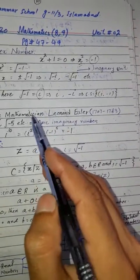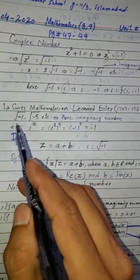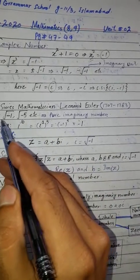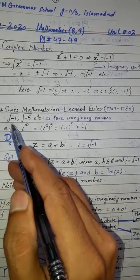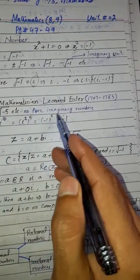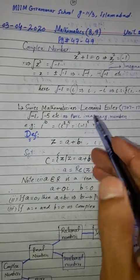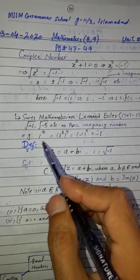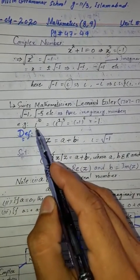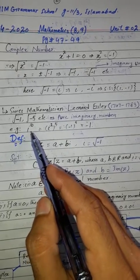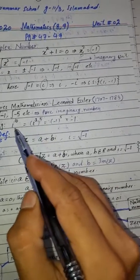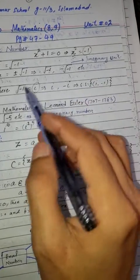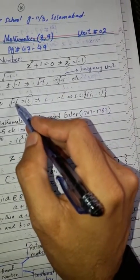So that's why we call such numbers pure imaginary numbers. Now, for example iota to the power 10 — you need to know how to solve this. Since iota squared equals minus 1, you convert the power into pairs of squares. Iota to the 10 equals iota squared to the power 5, which is minus 1 to the power 5.